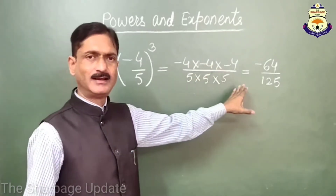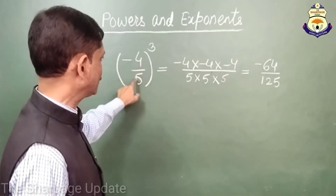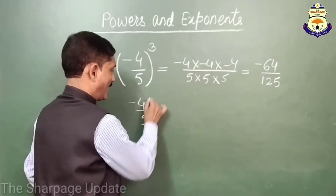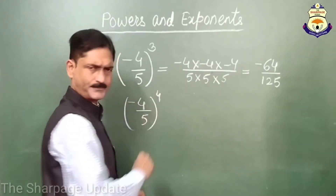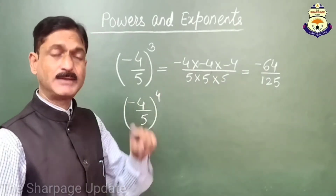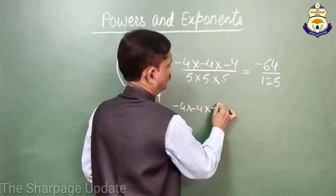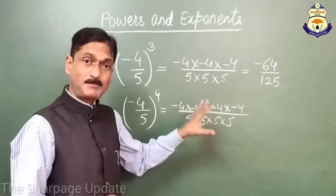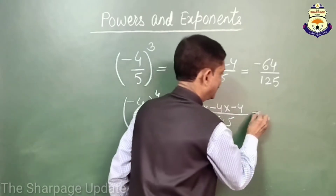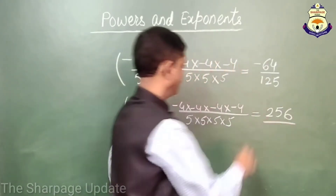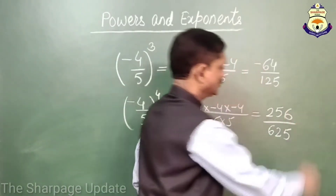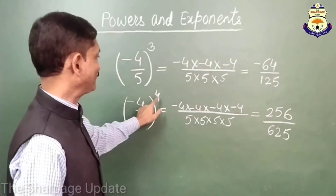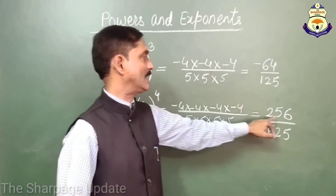So you can see here, if the power is an odd number, then the value of (-4/5)^3 is a negative number. And if the power is an even number — here in this example, 4 is an even number — so the value of (-4/5)^4 equals (-4 × -4 × -4 × -4) divided by (5 × 5 × 5 × 5), giving us 256/625. So if the power is even, the result is positive.